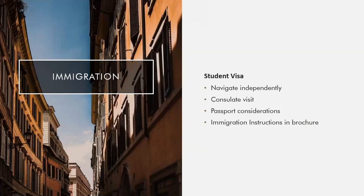Students will also be required to apply for a student visa for Italy. While John Cabot will provide some guidance, students should be prepared to navigate that process more independently. Most consulates will require an in-person appearance at the consulate as part of that application, so students should be prepared for that travel and expense. Students should ensure their passport is valid now and for at least six months after the end of the program, and should not plan any international travel over the summer, as their passport will be at the consulate as part of their visa processing. Students can read more about the Italian visa process in the immigration instructions included as a resource at the end of the brochure.